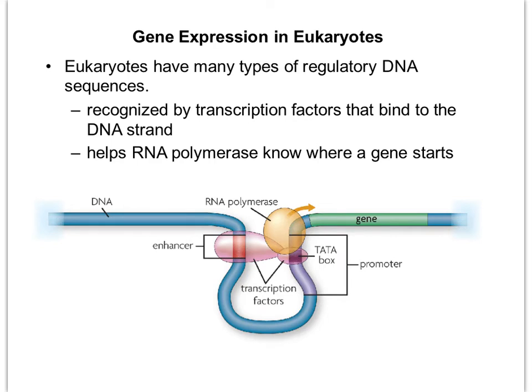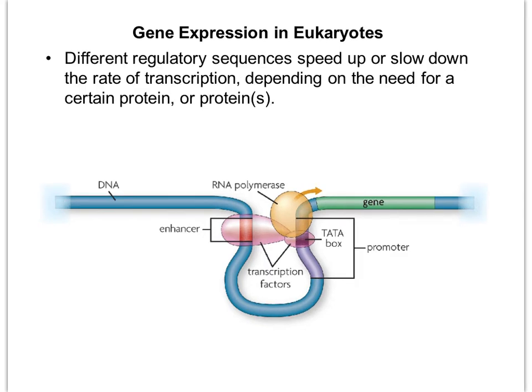Eukaryotes have many types of regulatory DNA sequences. One example shown here is called the enhancer, which is a sequence of DNA that helps regulate gene expression. Transcription factors interact with these regulatory sequences to either increase or decrease the rate of transcription, depending on the need for a certain protein. There is also another type of regulatory sequence called a silencer, whose job is to decrease the rate of transcription.